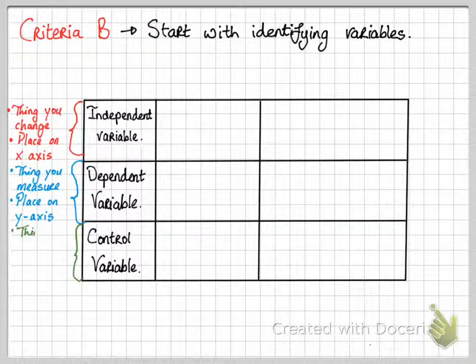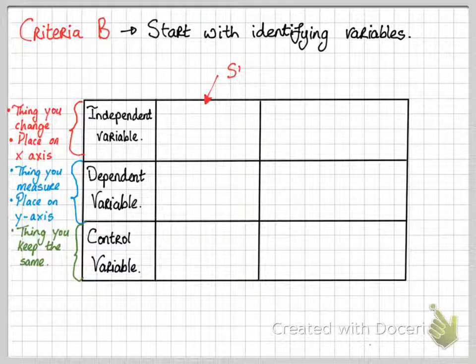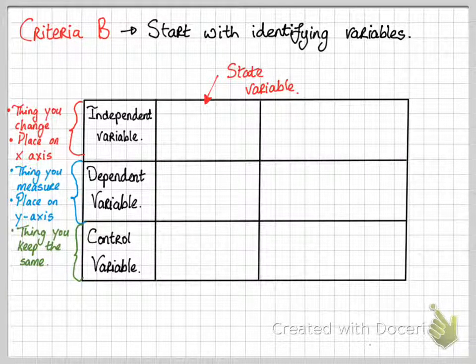And control variable is the thing you keep the same. Include all the variables into this column. Remember independent variable there should only be one, same for dependent variable. However, you can have many control variables.